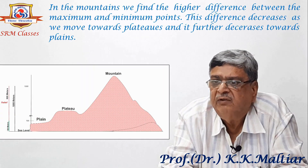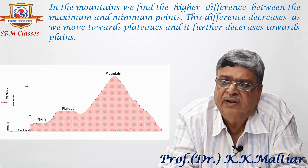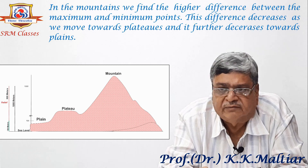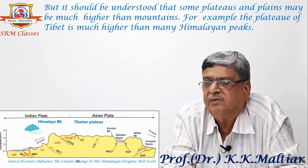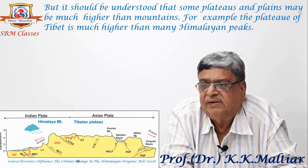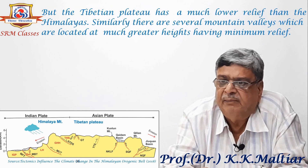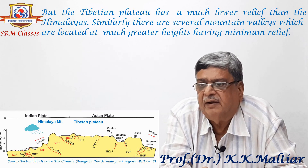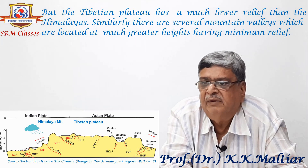In the mountains we find a higher difference between the heights of the maximum and the minimum points. This difference decreases as we move towards plateaus and it further decreases towards plains. But it should be understood that some plateaus and plains may be much higher than mountains. For example, the plateau of Tibet is much higher than many Himalayan peaks, but the Tibetan plateau has a much lower relief than the Himalayas. Similarly, there are several mountain valleys located at much broader heights having minimum relief.